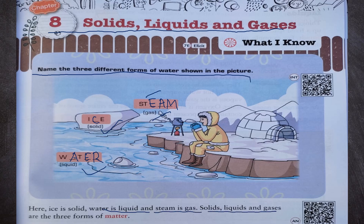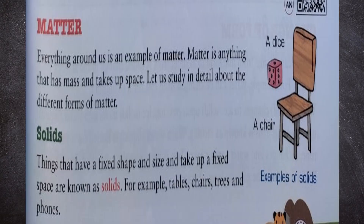Solids, liquids and gases are three forms of matter. Now, what is matter? Everything around us is an example of matter. Matter is anything that has mass and takes up space.